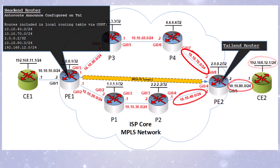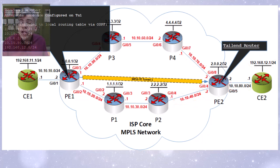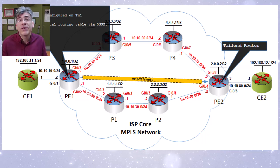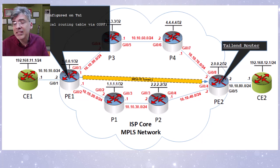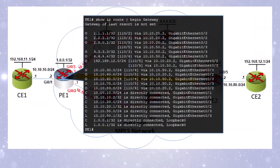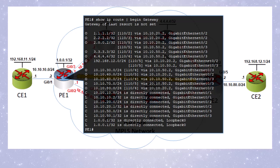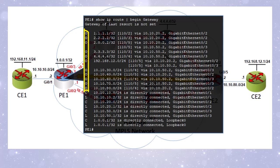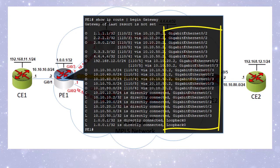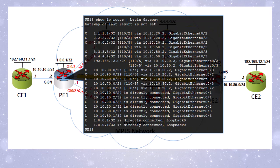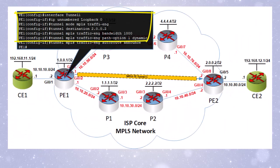Now that we understand what auto route announce is, let's configure it on our tunnel interface. If you're not sure what we've configured so far, take a look at the previous videos from this playlist to get up to speed. We'll go into our P1 router and take a look at our routing table. There's a lot of entries here because all of the networks on our topology are included — both OSPF learned and directly connected. However, what we don't see is our tunnel interface as an exit interface for any of the routes.